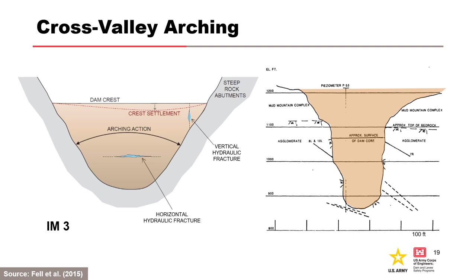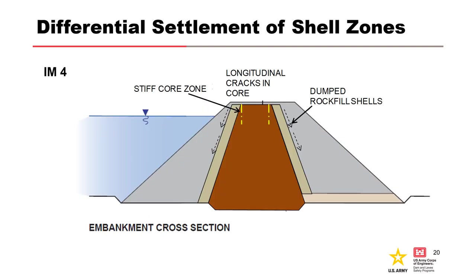The Corps of Engineers' Mud Mountain Dam in Washington is an example: the 425-foot-high dam extends across a narrow rock gorge with steep volcanic rock walls more than 275 feet high. Defects in the core consisted of loose zones and voids due to settlement and arching of the core material within the narrow steep rock canyon. The dam was remediated with a cutoff wall and remedial grouting. For IM-4, more compressible outer shell zones can cause a down-drag effect on a stiff core zone, inducing longitudinal cracking in the core. Longitudinal cracking can change to transverse cracking on the abutments.